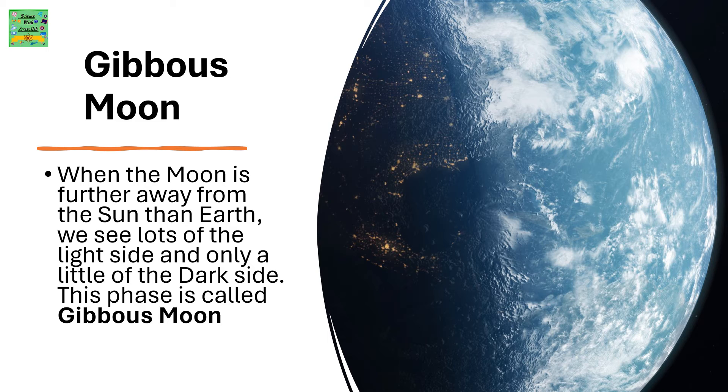Gibbous Moon. When the moon is further away from the sun than Earth, we see lots of the light side and only a little of the dark side. This phase is called Gibbous Moon.